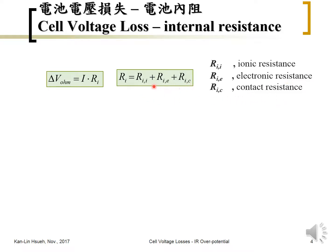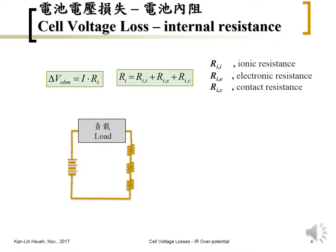All three resistances are independent of applied current, so they can be treated as constants. If you plot the ohmic voltage loss against the current, it shows linear behavior. To visualize this, consider a diagram where a fuel cell or battery is connected to an external load circuit. The internal resistance causes a voltage loss, delta V ohmic.